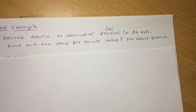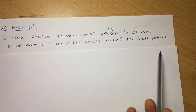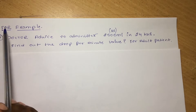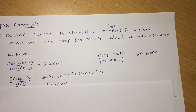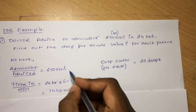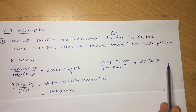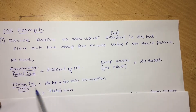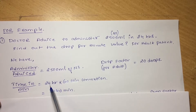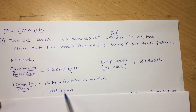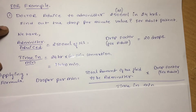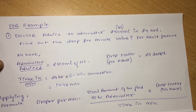Going to the question: the administered volume is 2500 ml of NS, and the drop factor for adults is 20, which is constant. The time is given as 24 hours, but since we need time in minutes, we multiply 24 by 60, which gives us 1440 minutes. So 24 hours has been converted into 1440 minutes.